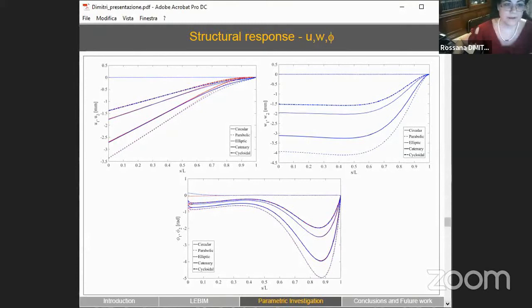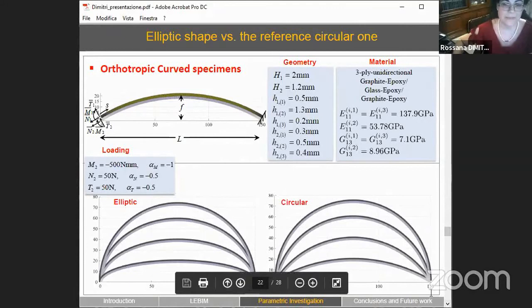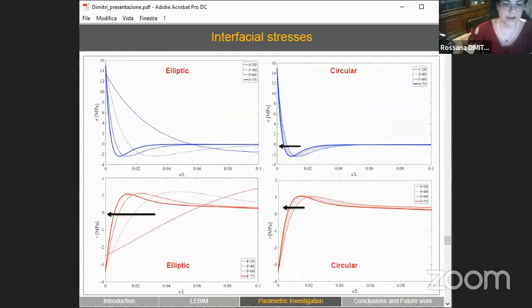For this limit case, among a large parametric investigation, I also show you some results obtained by comparing the elliptical shape against the circular one for different radius of curvature while maintaining fixed the length span and varying the values of the rise. The last value of the rise considered corresponds to the length mid-span of the curved specimen. For an increased value of the rise, both stress components maintain almost the same peak value at the crack tip with an oscillating behavior within a shorter distance from it in a more localized zone.